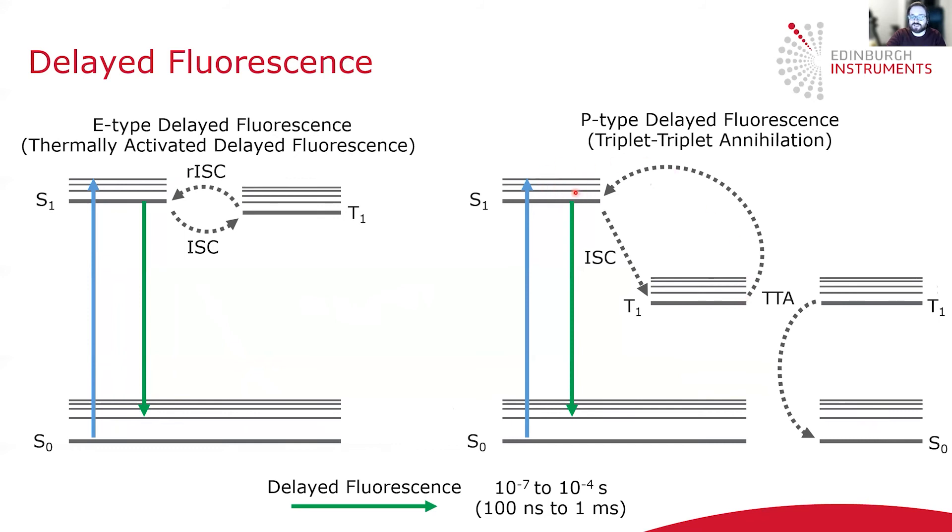And then this state can radiatively relax, resulting in delayed fluorescence. Delayed fluorescence tends to occur on a timescale somewhere between fluorescence and phosphorescence, with typical lifetimes of 100 nanoseconds to one millisecond.